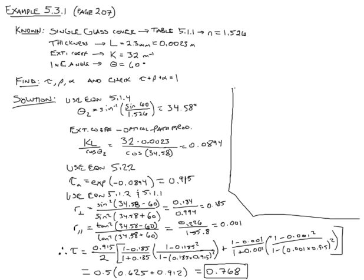Next we're going to calculate reflectivity using equation 5.3.2. That gives us rho equals 0.5 times 0.185 times 1 plus 0.915 times 0.625 plus 0.001 times 1 plus 0.915 times 0.912.